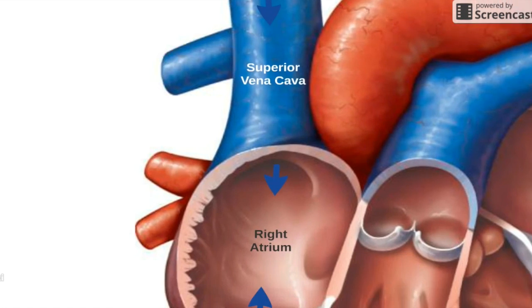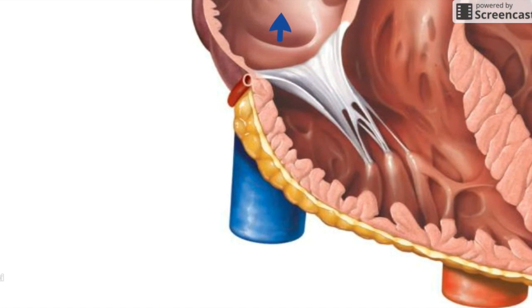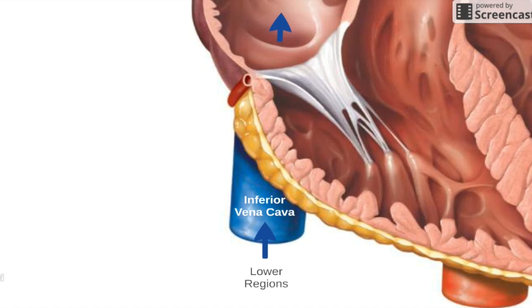The second vein is the inferior vena cava. Remember that inferior means below, so this vein comes into the right atrium from below. It carries deoxygenated blood from the lower regions of our bodies, like our legs and our torso.